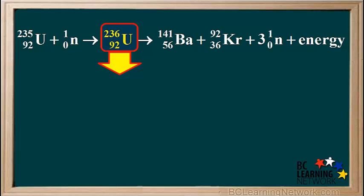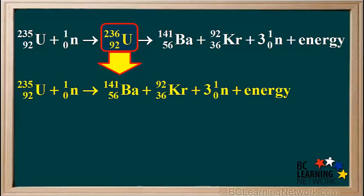If we do not show the intermediate nucleus, uranium-236, we can shorten this equation to this. The uranium-235 plus a neutron produces barium-141, krypton-92, three neutrons, and energy.